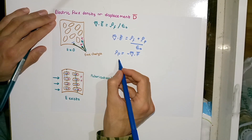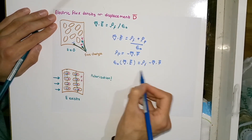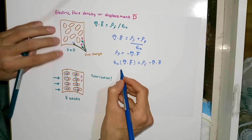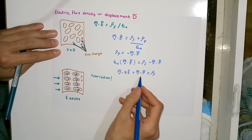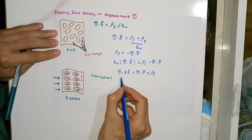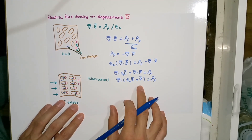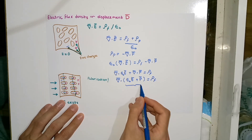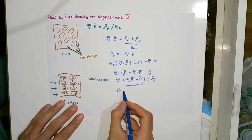We do some basic algebra and transfer all divergence operators to one side. We unify the two divergence operations from both terms and finally arrive at this form of the equation. We denote this entire term by a new vector quantity D, which represents the electric flux density or the displacement.